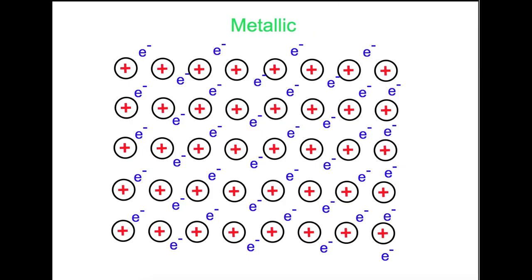The final type of bonding is metallic bonding, which only happens for metallic elements. This is where we have a regular repeating arrangement of positive cores and delocalized outer electrons which are able to move between all of the positive cores. This is what allows metals to conduct electricity — when a current is passed through, the electrons can start to move because they are already freely moving within the structure.